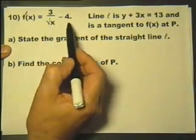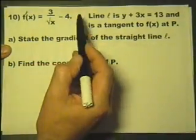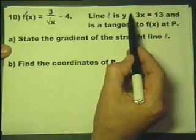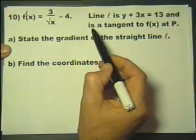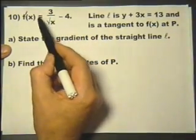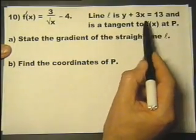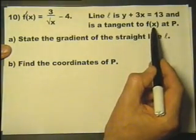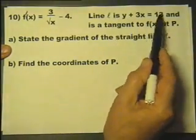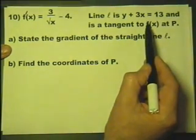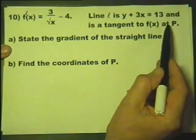But basically the function f dash is this expression. Line L has this as its equation, and it is tangent to f(x) at the point P.